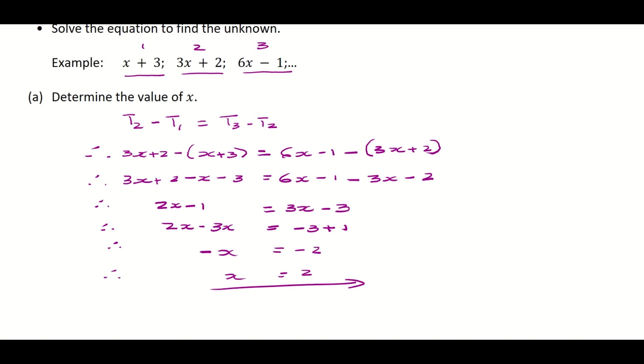So we've solved for x. The second part of the question says write the numerical values of the first three terms. We found the value of x and this is pretty easy to do. Term 1 was x plus 3, so you just substitute x with 2. Term 1 is equal to 2 plus 3, therefore term 1 is equal to 5. Don't forget your therefore signs.